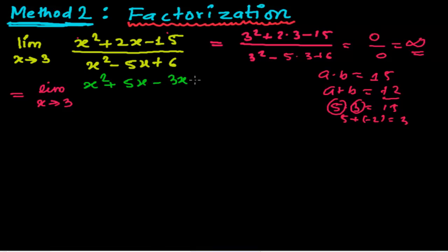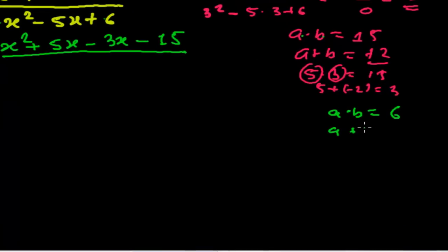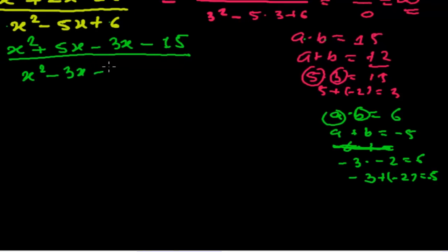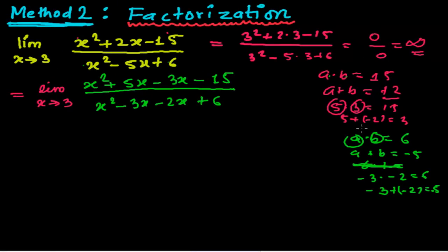For the denominator, I need to search two numbers whose product will be 6 and whose addition will be minus 5. Those two numbers are minus 3 and minus 2, because minus 3 times minus 2 equals 6 and minus 3 plus minus 2 equals minus 5. So the denominator becomes x squared minus 3x minus 2x plus 6.